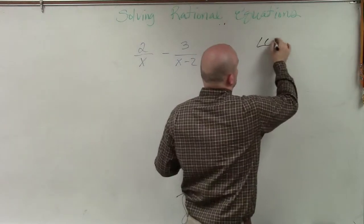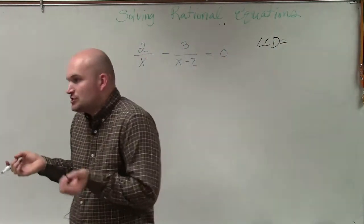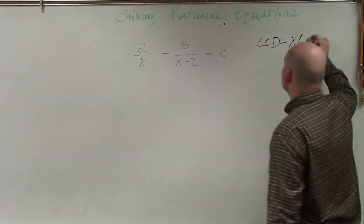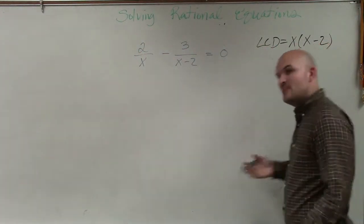And the easiest way I told you guys to find the LCD is simply just to multiply your two denominators. So therefore, you have x times x minus 2. That is your LCD.